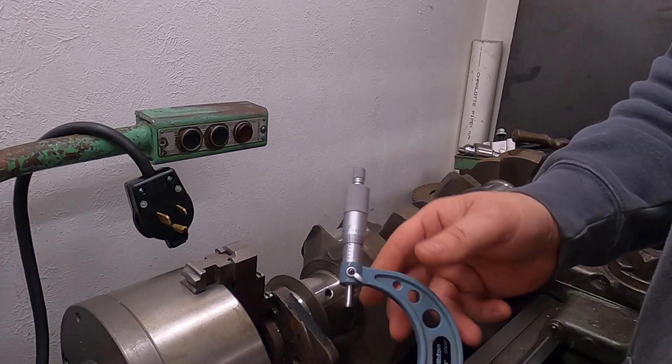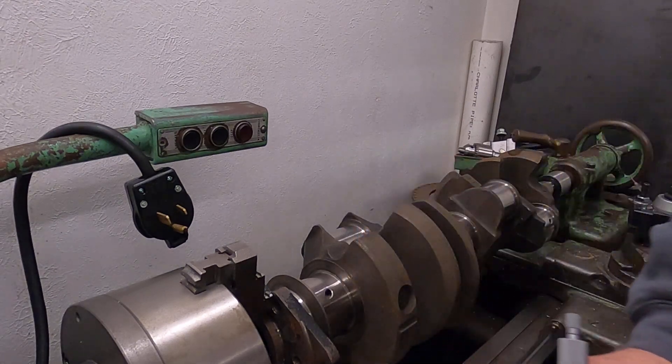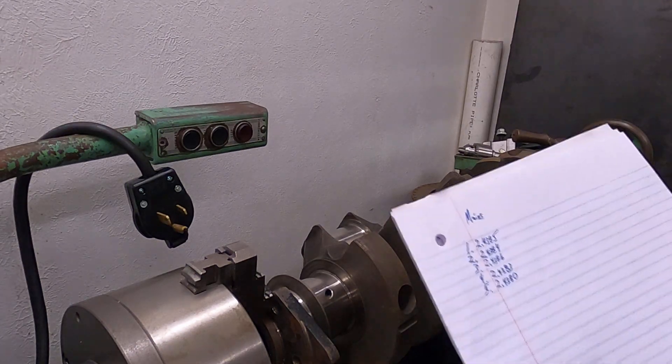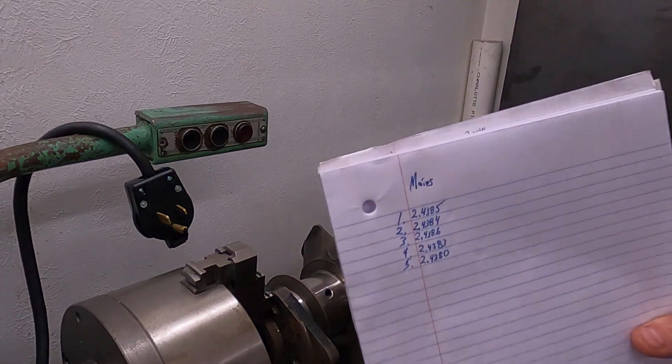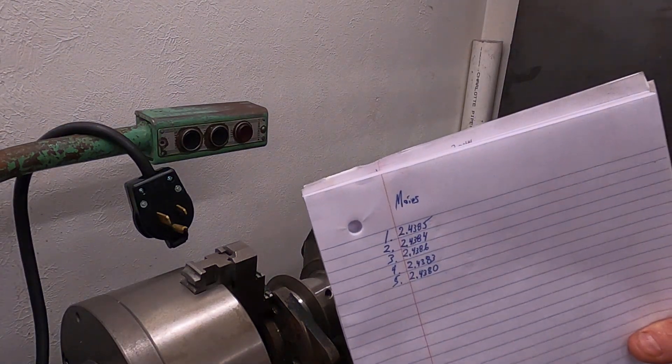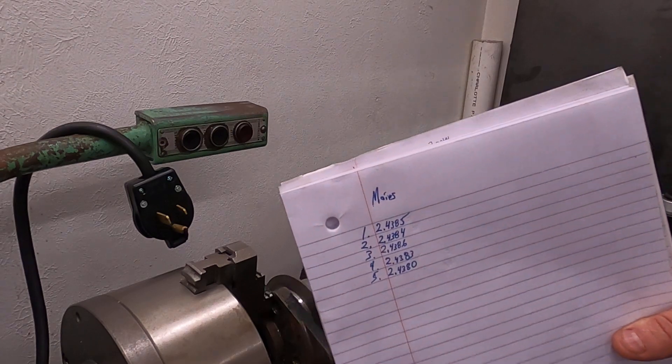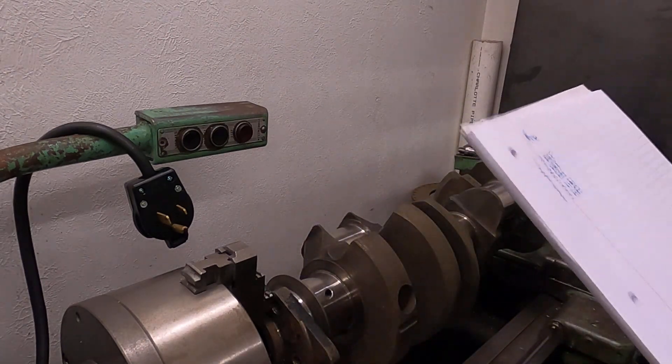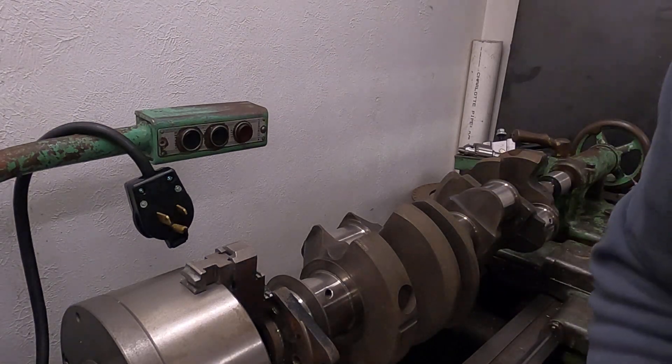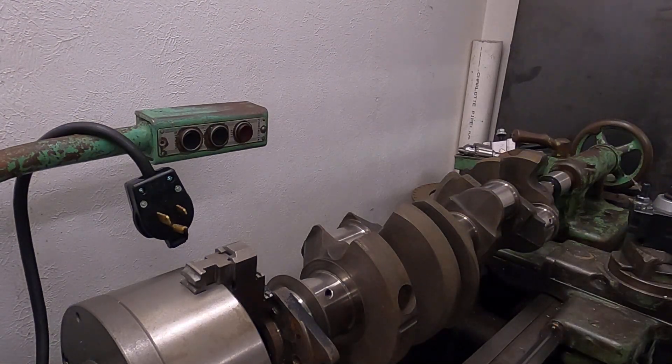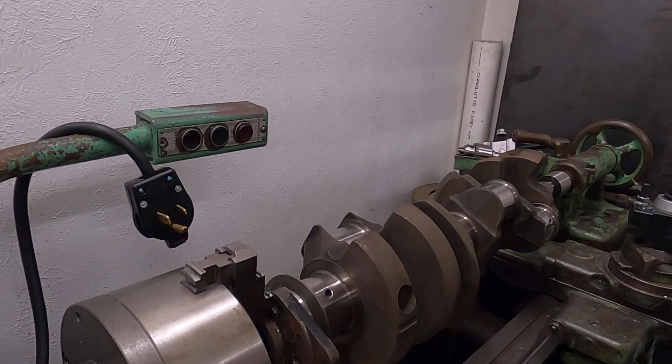Anyway, I checked that for size and I've written down what each of the main journals are. Now I'm going to take this micrometer and use it to set my dial bore gauge to zero.